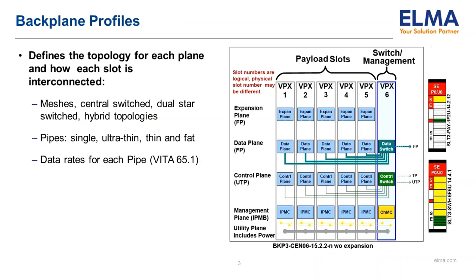Backplane profiles are generally defined as a collection of slot profiles and the trace wiring between them. The backplane topology drawing shown here shows in general which slots are connected to each other and the size of those connecting pipes. It is important to note that the order of the planes illustrated in the topology drawing for each slot position does not represent the physical order of those connections in the slot.